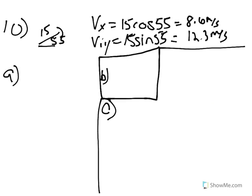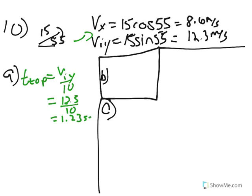Number 10, the last one: a projectile launching device fires a golf ball at 55 degrees above the ground with a muzzle velocity of 15 meters per second. First break it into components. To find the highest point, find the time to the top first: viy divided by 10, which is 12.3 divided by 10, equals 1.23 seconds. Then plug into dy: dy equals one half times negative 10 times 1.23 squared plus 12.3 times 1.23, and you get 7.4 meters.